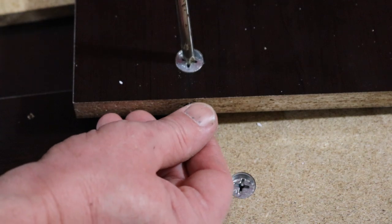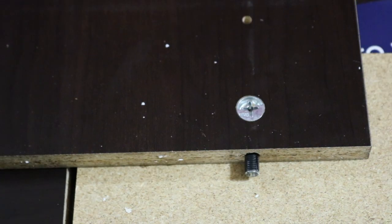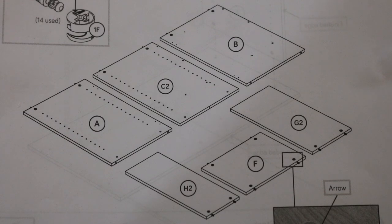Now you have to do this with every single hole, so there's 14 of them, and just do this step I just did 14 times. C2, B, H2, F, and G2 all get the little chrome circles. They're all labeled so it's easy to see.